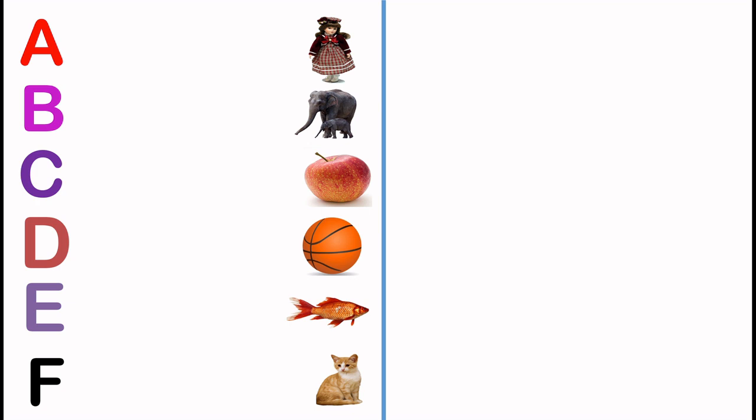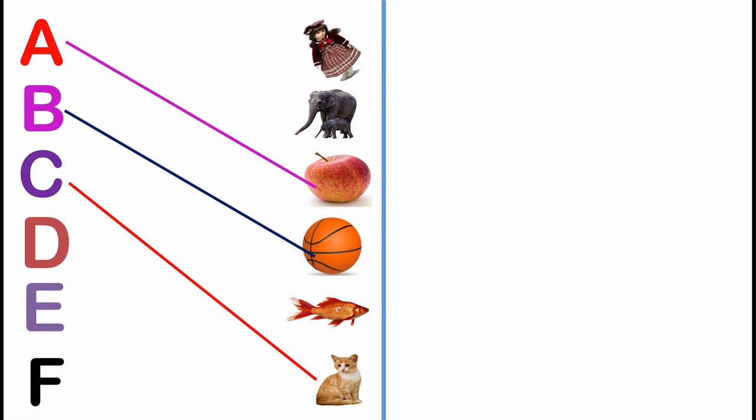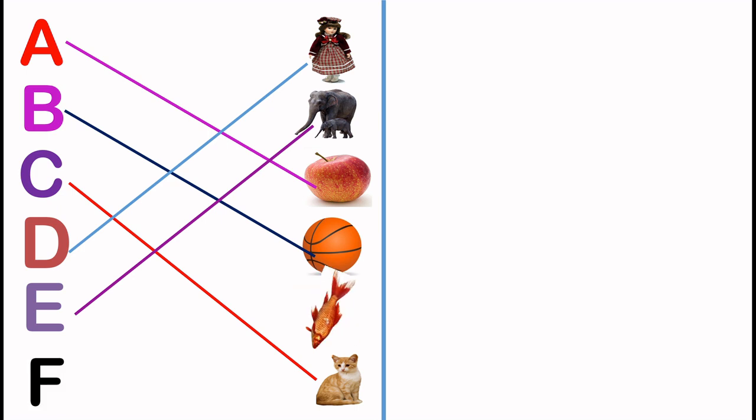Now we will match. A, A for apple. B, B for ball. C, C for cat. D, D for doll. E, E for elephant. F, F for fish.